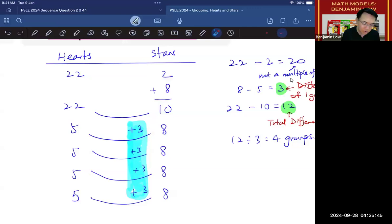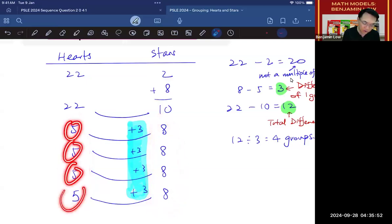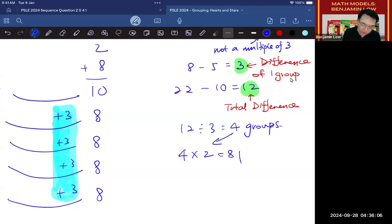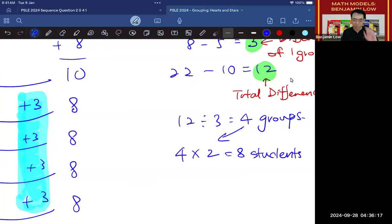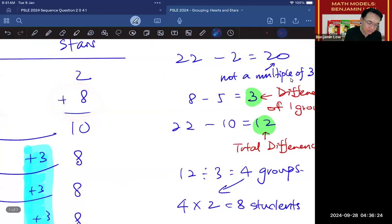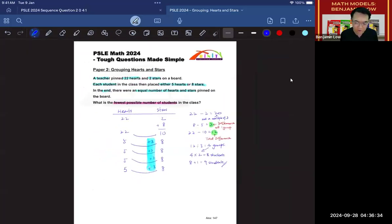Well, there are two ways to do this. One way is you can just simply count it. That's 1, 2, 3, 4, 5, 6, 7, 8, 9. Or you can say that since there are 4 groups, then each group having 2 pupils, 1 putting hearts, 1 putting stars, will give me 8 students. 8 students in 4 groups, plus the additional student that put the stars. So 8 plus 1 will give you 9 students. And that is the answer to this question.